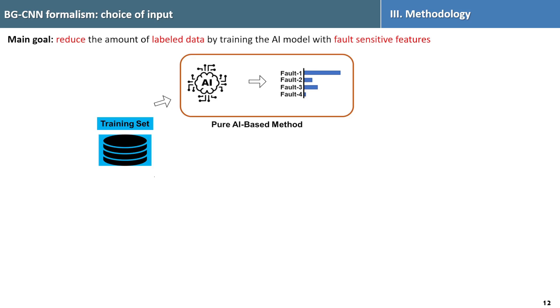In pure AI based method, there is a training set consisting of various sensor measurements from the system and the corresponding fault labels. The AI model is directly trained using the raw sensor measurement data or by extracting some statistical feature.